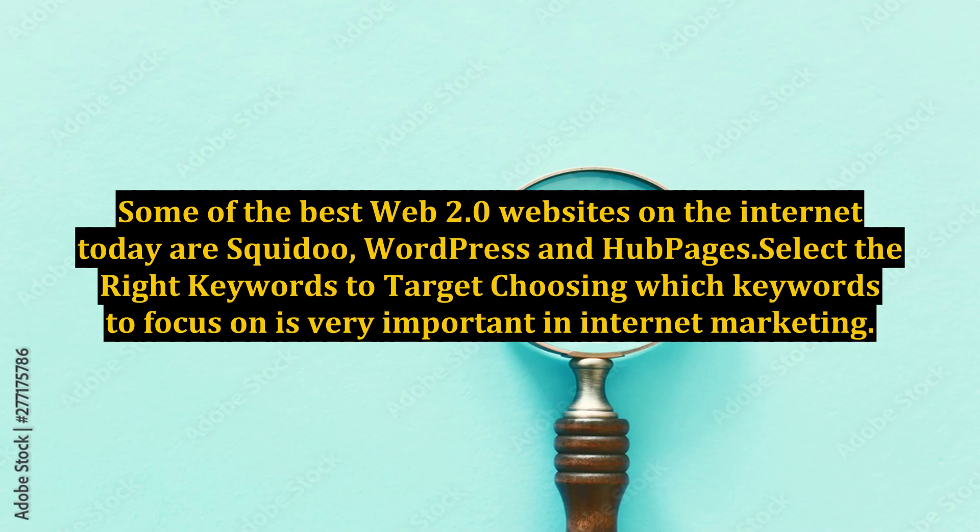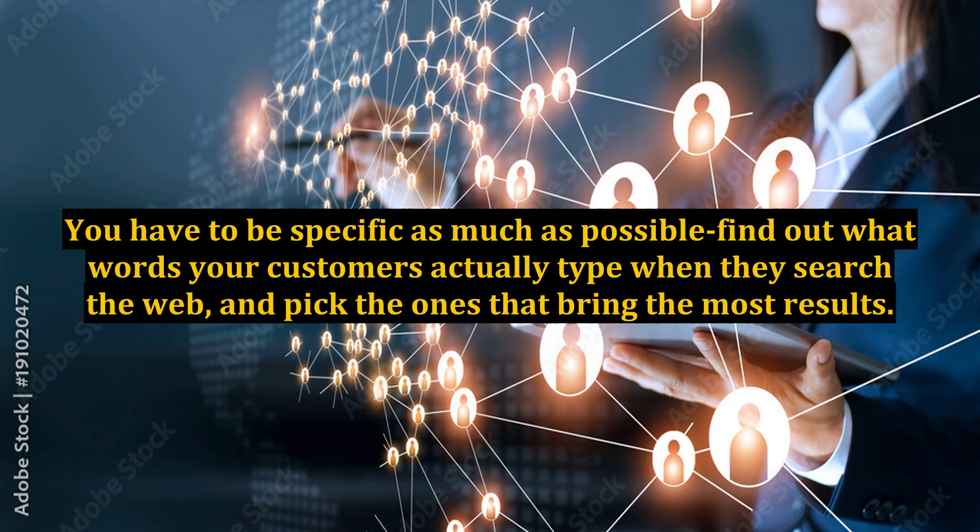Some of the best web 2.0 websites on the internet today are Squidoo, WordPress, and Hubpages. Select the right keywords to target. Choosing which keywords to focus on is very important in internet marketing. You have to be as specific as possible — find out what words your customers actually type when they search the web and pick the ones that bring the most results.